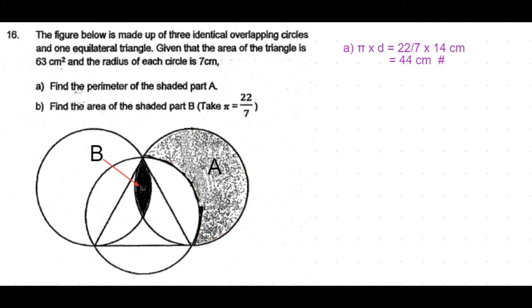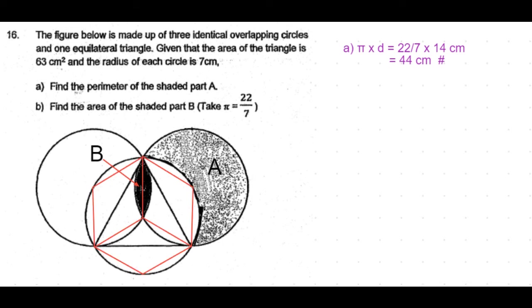Coming to part B of the question, the small shaded area is the part B. To find the area of this shaded part, we split the triangle into three parts and draw a hexagon around the triangle inscribed inside the circle.